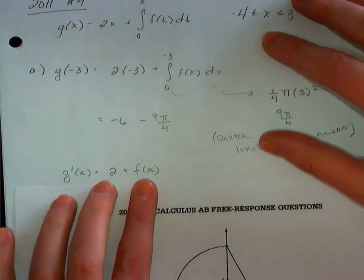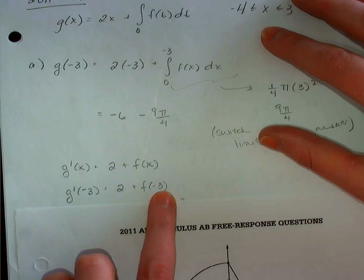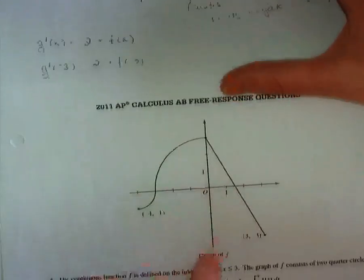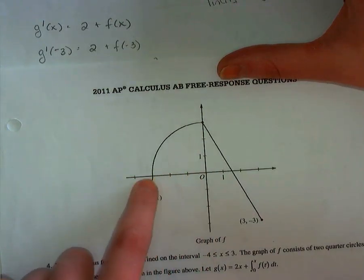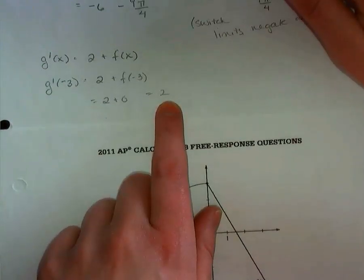And then g prime of negative 3, we just sub that in. 2 plus f of negative 3. Well, to find f of negative 3, you have to go to your graph. This is the graph of f. So when x is negative 3, y is 0. So that's your final answer right there for part A.